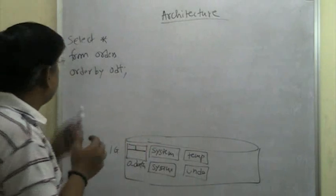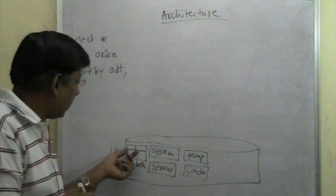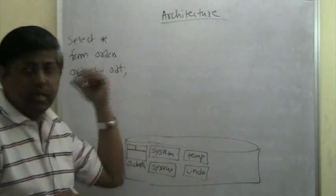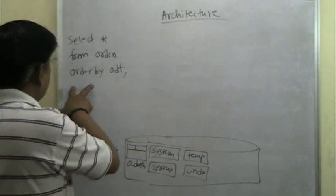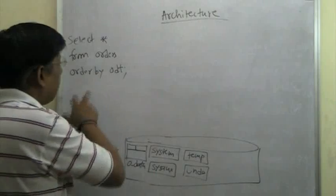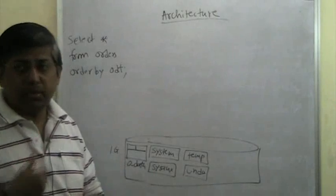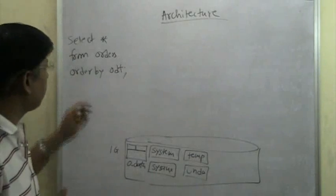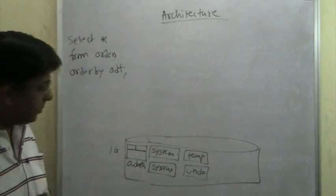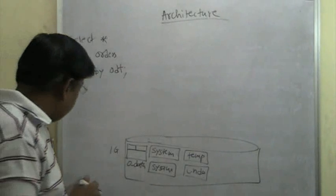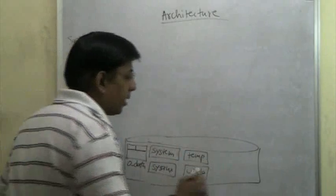When the user types this SELECT statement, Oracle has to get the data from here and display it to the user — not just display it, but it will have to order it by the order date and then display it. So it is going to do certain activities. The very first thing is, this is what is called a database.